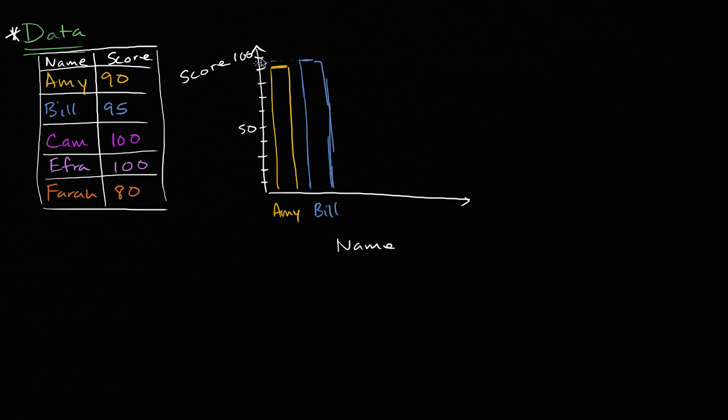And then you have Cam, who got 100 on the exam. Obviously I'm hand-drawing it, so it's not as precise as if I were to do it on a computer. So this right over there, that is Cam's score. Efra got the same score as Cam, so her score is going to be Efra's score. She also got 100. And then finally Farrah got an 80, so Farrah got an 80. This is Farrah's score right over here.